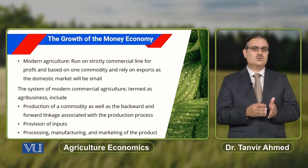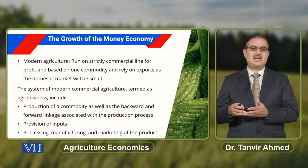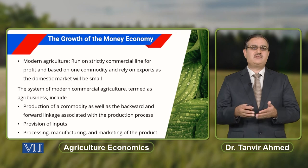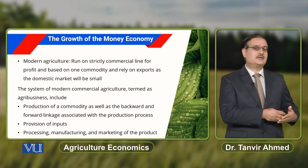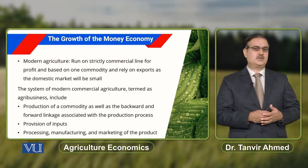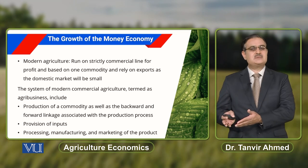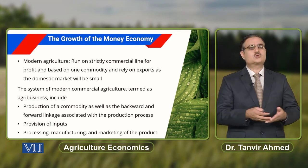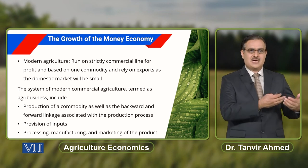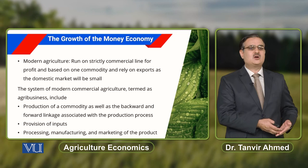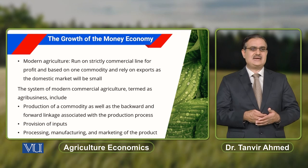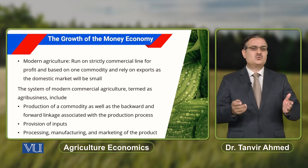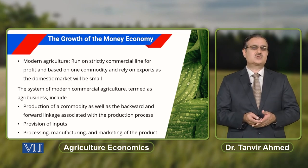For this system of modern commercial agriculture, we use the term agribusiness. Agribusiness includes production of a commodity as well as backward and forward linkages associated with the production process. Backward linkages refer to the inputs used for production of that agricultural commodity, and forward linkages look at where the produced commodity is used. Agribusiness covers three categories: production of commodity, provision of inputs, and processing, manufacturing, and marketing of products.